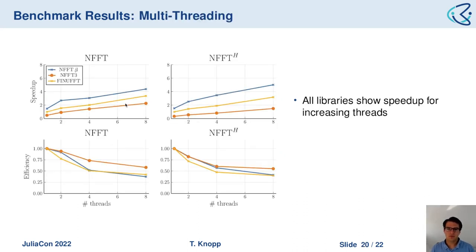Finally, the multi-threading results show speedup compared to FiNUFFT. Both show a nice speedup as the number of threads increases, both in the direct and adjoint transforms — the adjoint being particularly challenging to multi-thread. Looking at parallel efficiency, all algorithms reach roughly 0.5 efficiency per thread, which is actually quite good for such an operation.